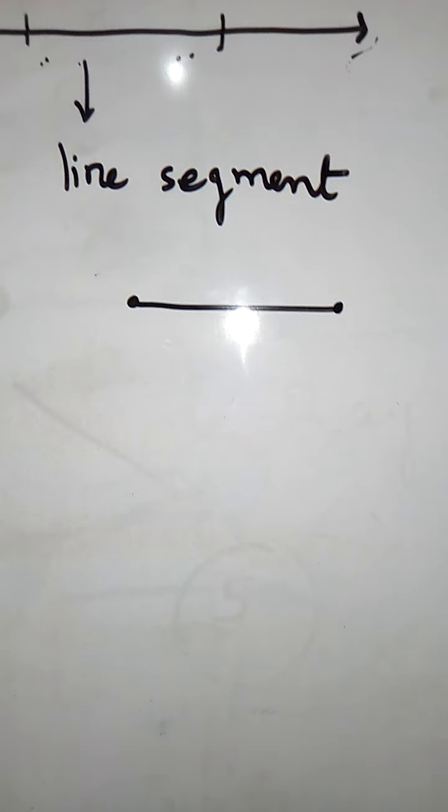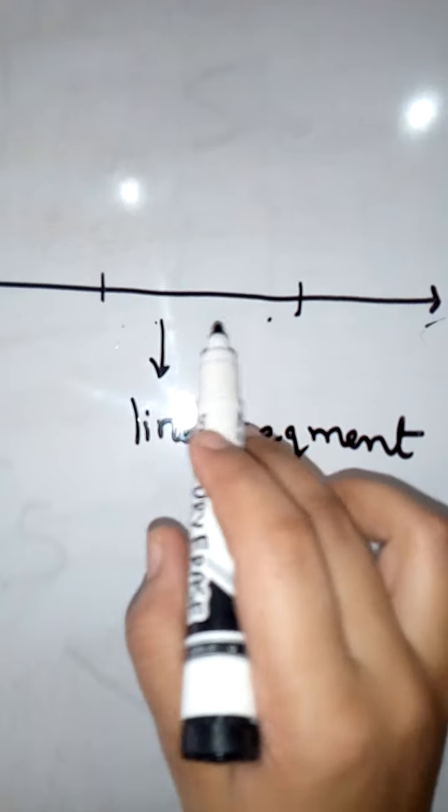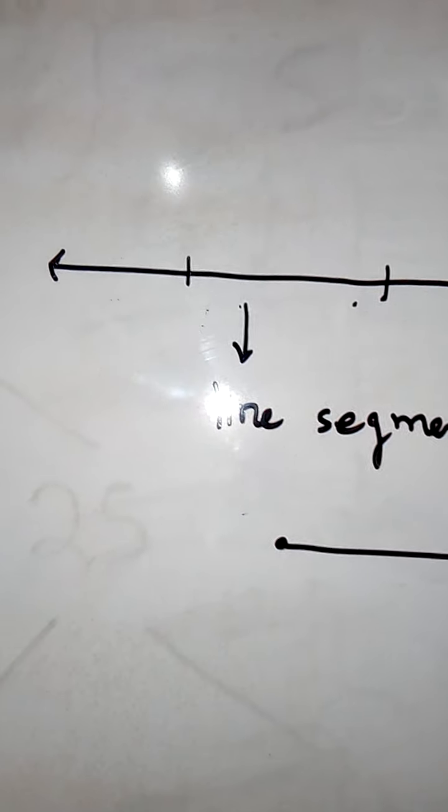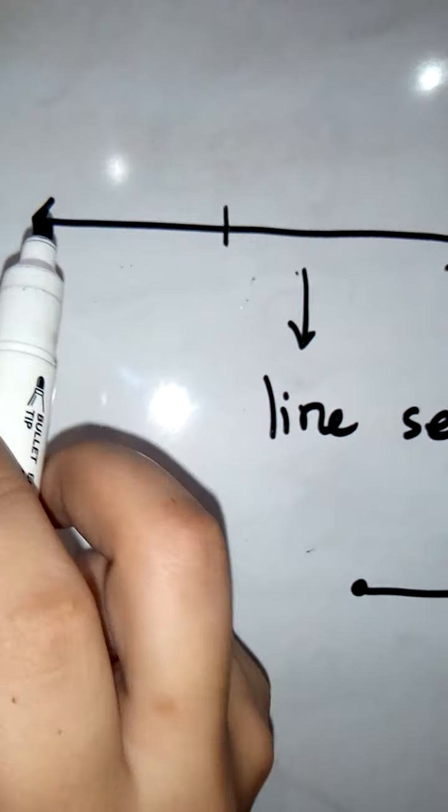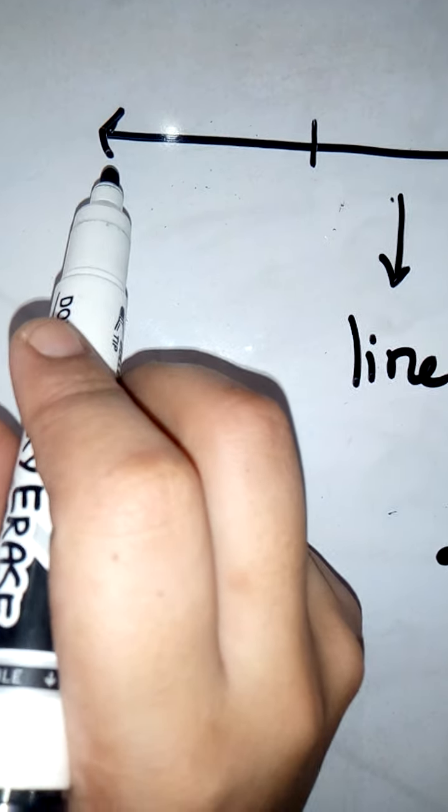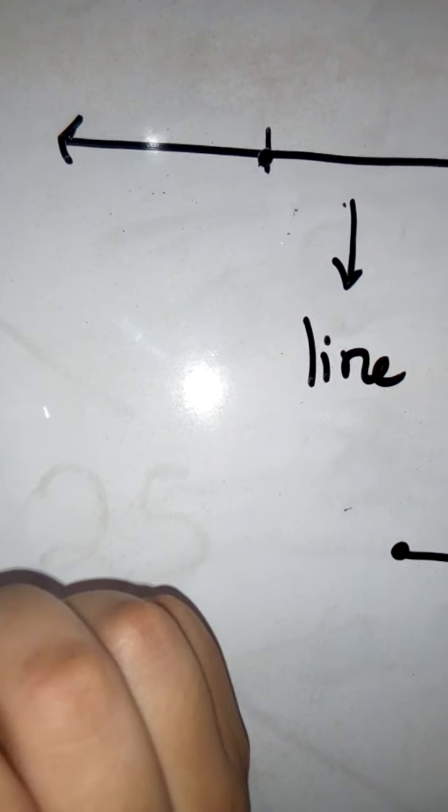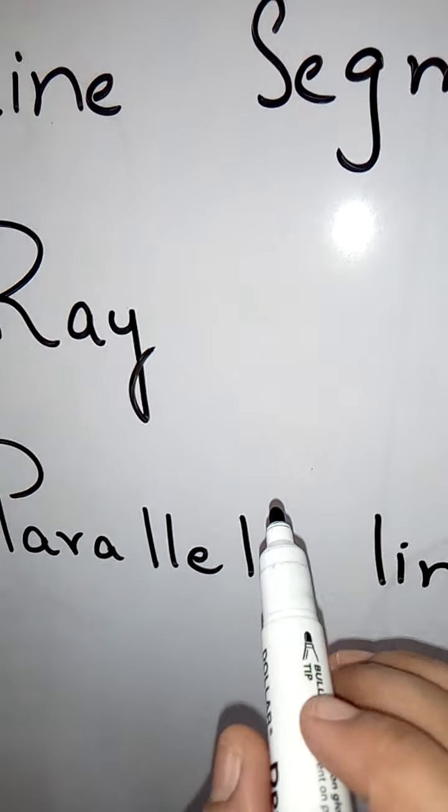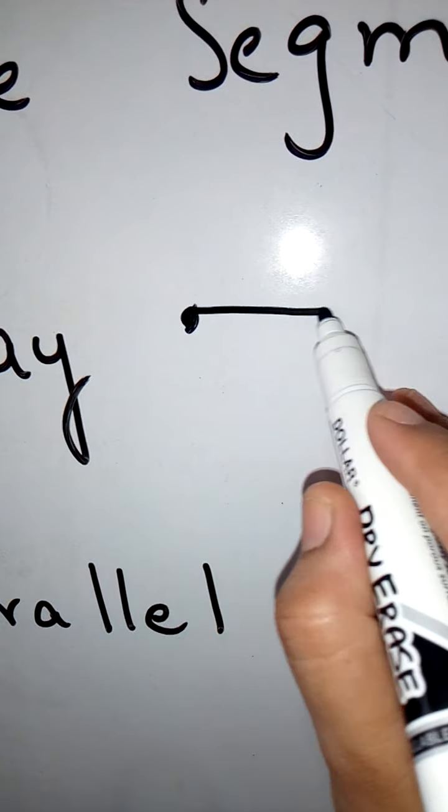Now, when we cut the straight line from two parts, this cutted part is known as a line segment. But what about this part which have an arrow on one side and the other side we have a point? This part has a special name as well. It is known as ray. It looks like this.